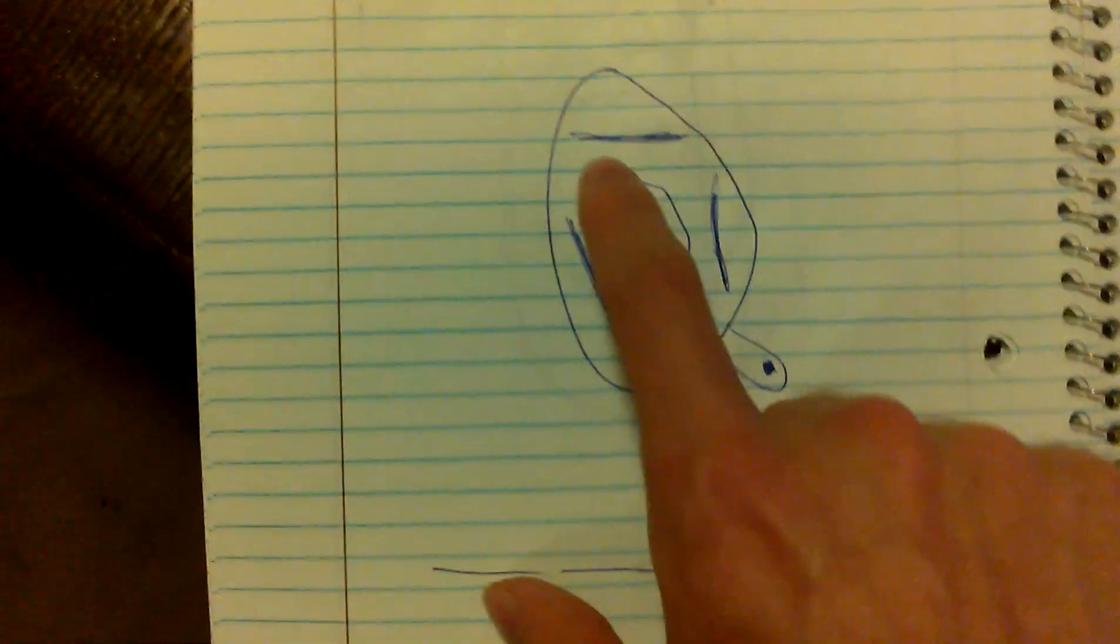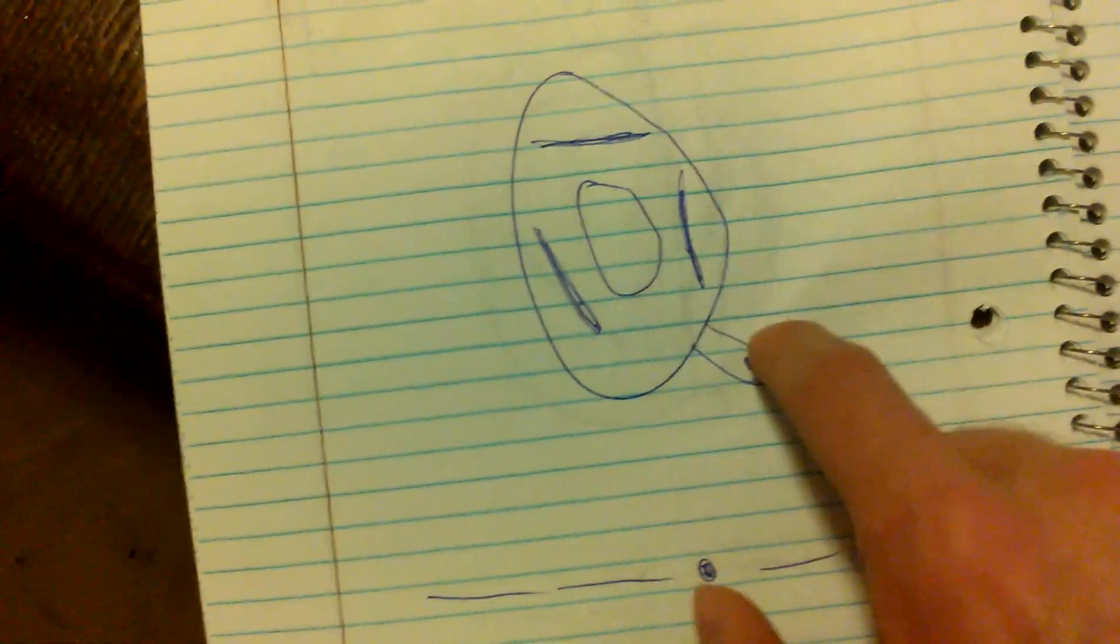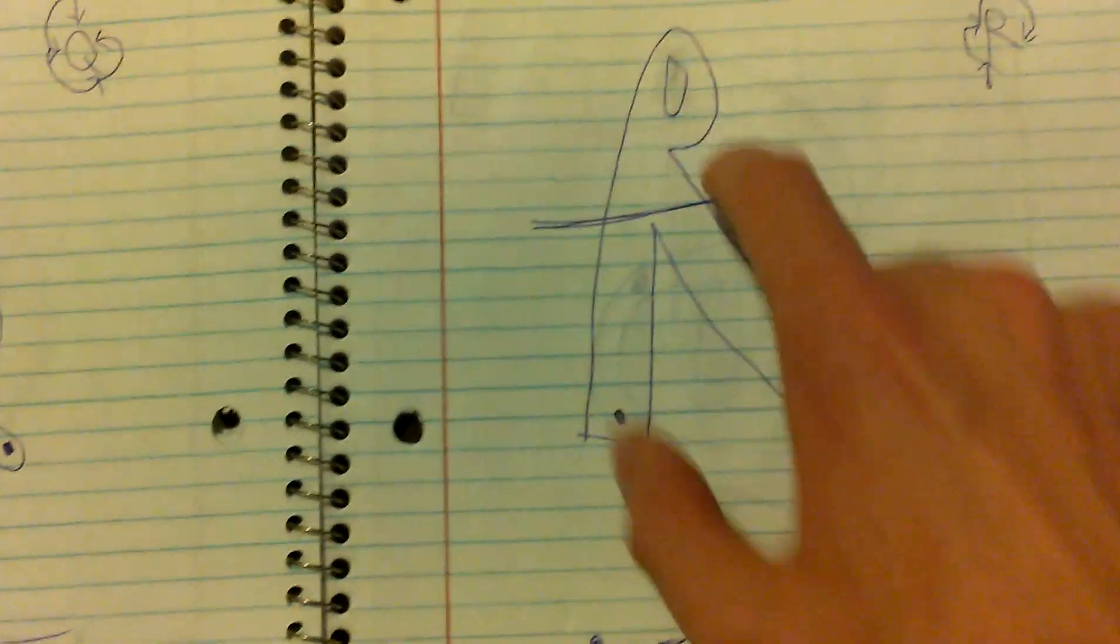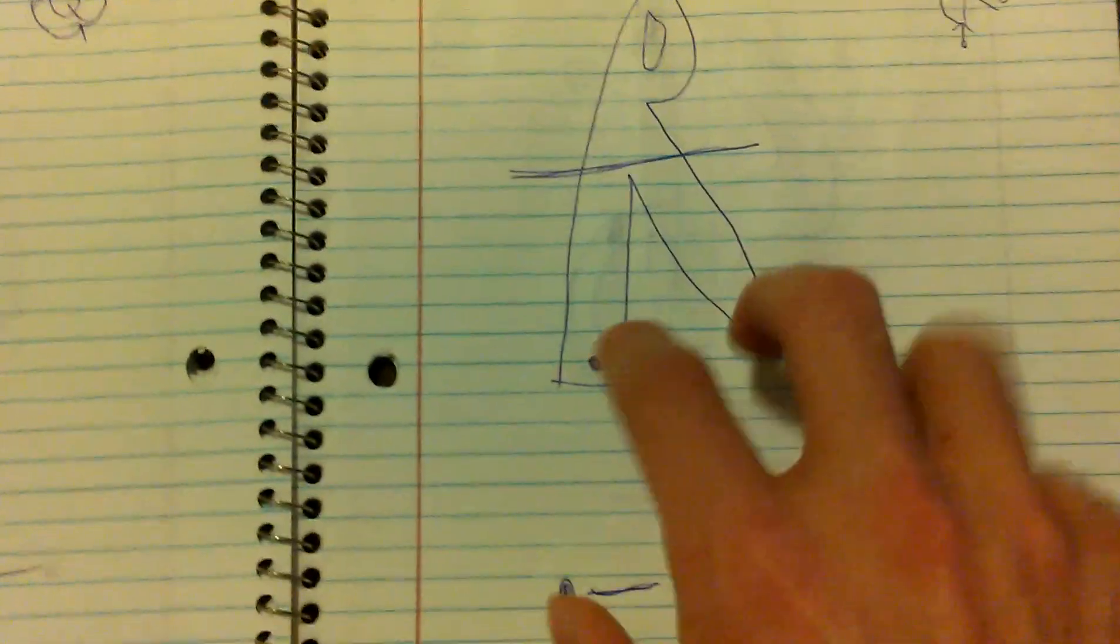A Q goes dash dash dot dash, it goes in a circle. You could do that or you could do that. And R is dot dash dot, it does like an arch right there.